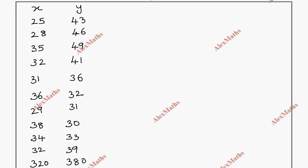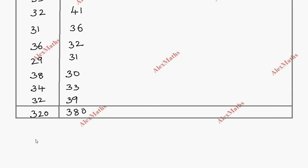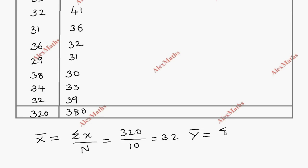Now we calculate the mean using the table formula. We take columns for x², y², and x·y. x̄ equals sigma x by n, so 320 divided by 10 equals 32. ȳ equals sigma y by n, so 380 divided by 10 equals 38.